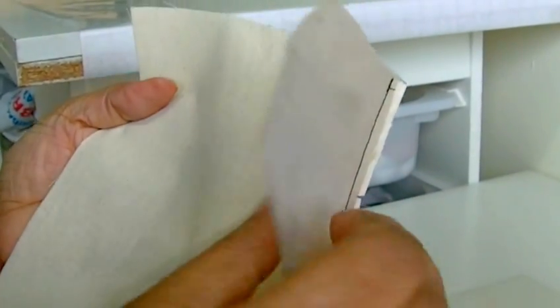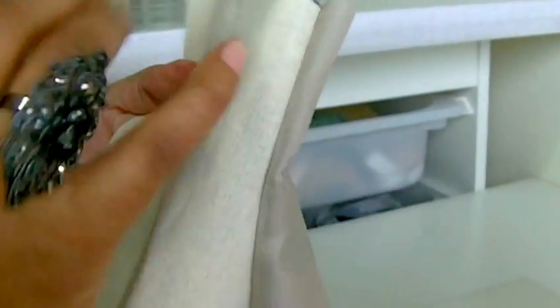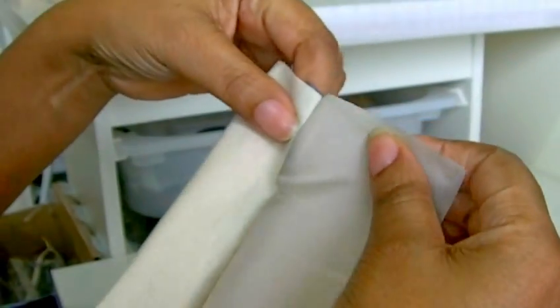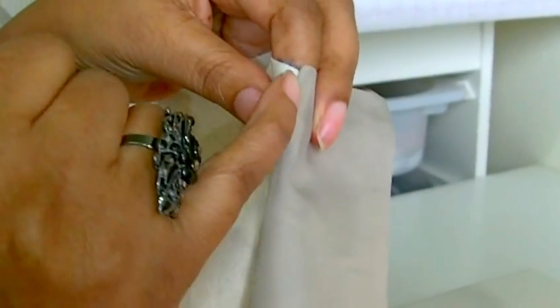The next row of stitching I need to do is the understitching, which is going to be keeping this lining to the back of the skirt, the wrong side. So I'm going to be doing it onto the lining, roughly a couple of millimeters away from the seam line.